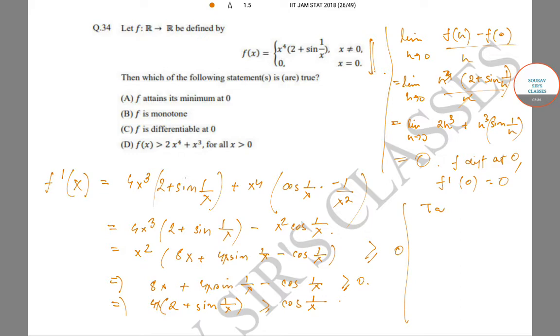Now take x less than 0 such that cos(1/x) is greater than 0. Then cos(1/x) would be greater than 0, but 4x(2 + sin(1/x)) will be less than 0, so we have a contradiction. This gives us that F is not monotone, so we already get that C is true and B is wrong.